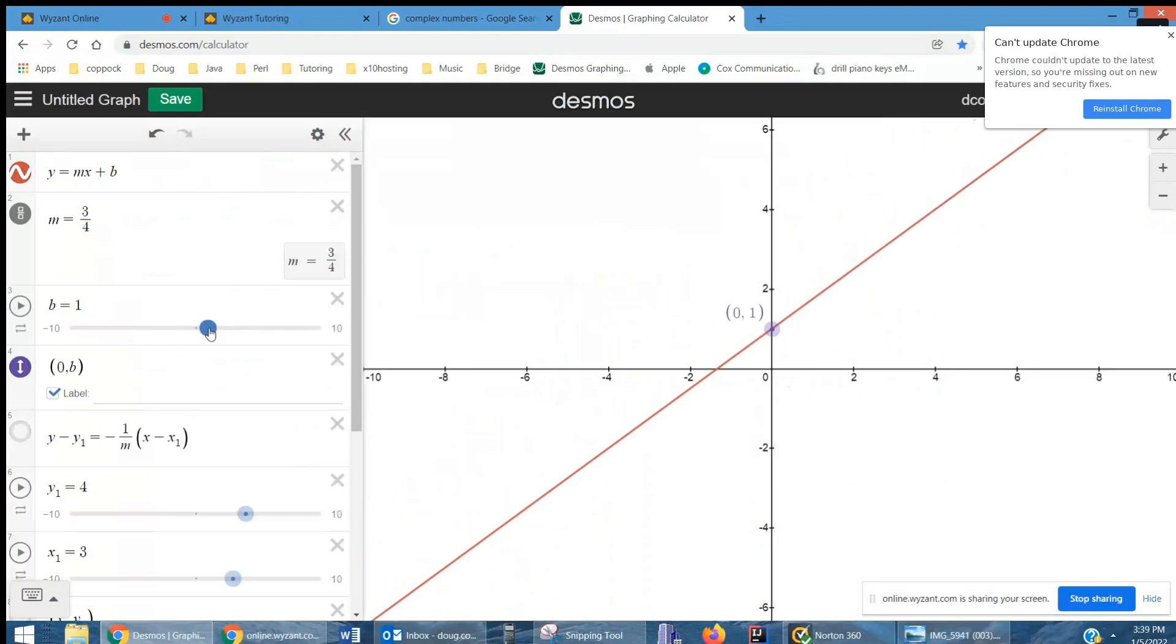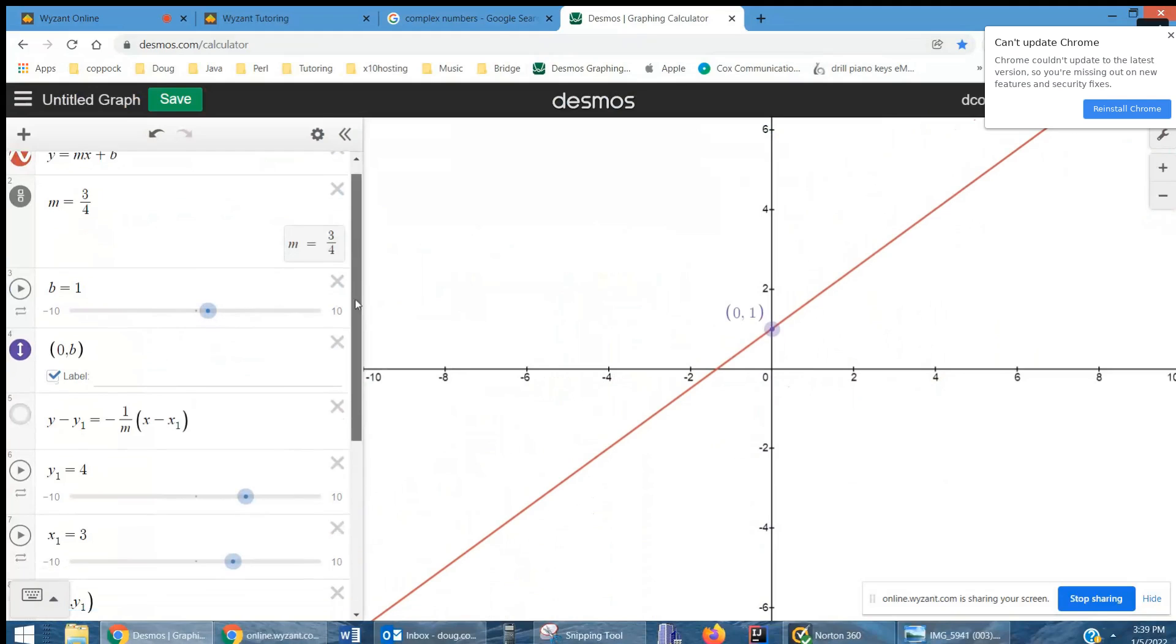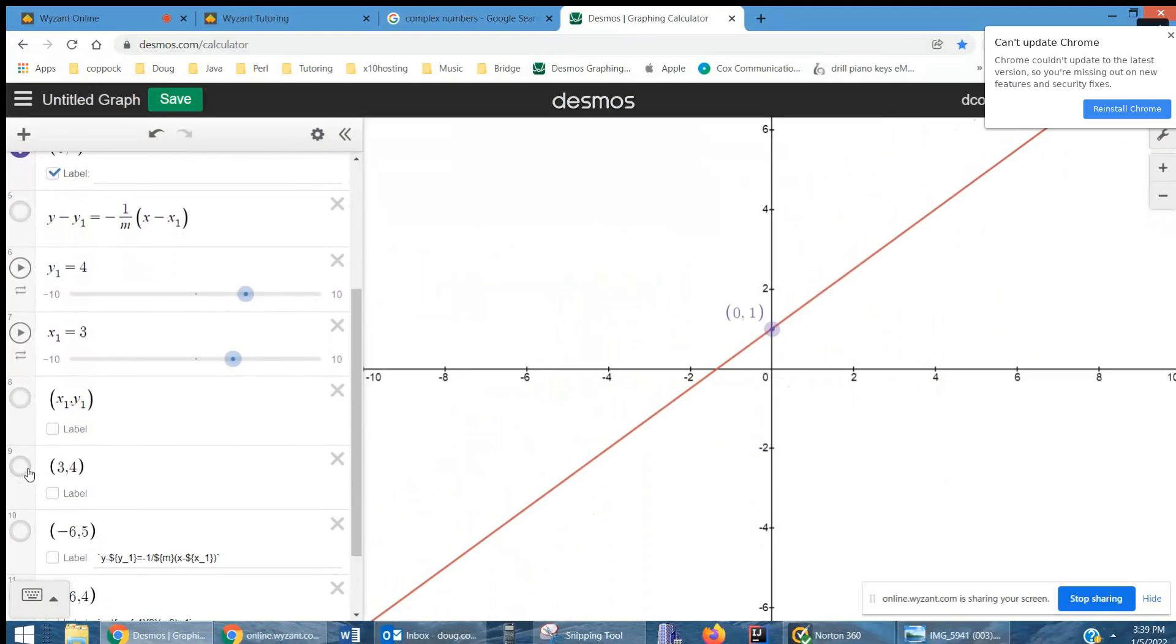I'm going to plot the point 3, 4, which is right here, and label it. And we want to find the equation of the line that passes through that point and is perpendicular to that red line.